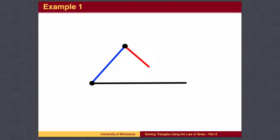There are three cases. Sometimes the side opposite the given angle is too small and will not reach the far side. In this case, there will be no solutions.